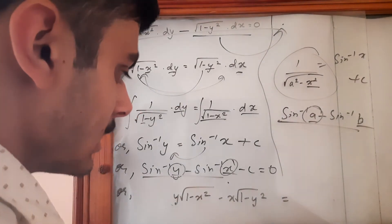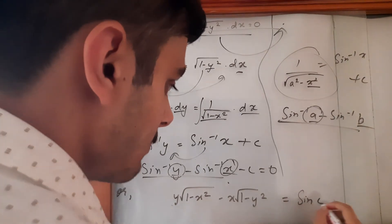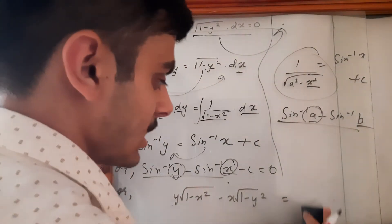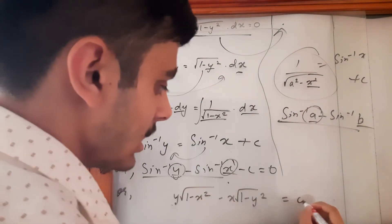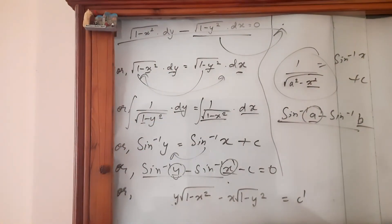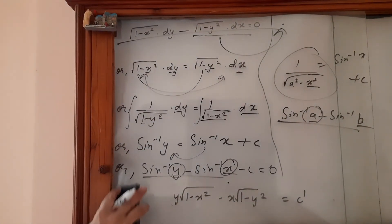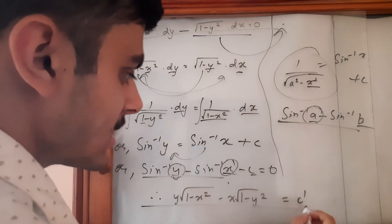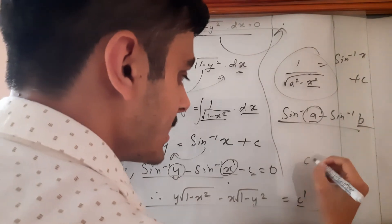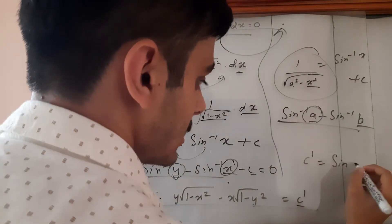And let's assume sin c is also one constant, let's say c prime. So yes, that way you can say that this is a final answer where c and c prime are different, where c prime is equal to sin c.